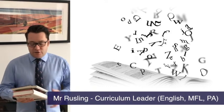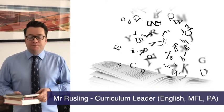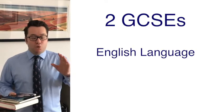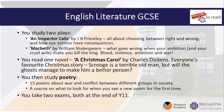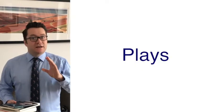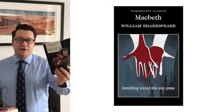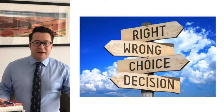Hi Year 9. We're really looking forward to teaching you English over the next two years. You'll do five hours of English each week and at the end you'll get two GCSEs — one in English Language and one in English Literature. In Literature, you'll study four main groups of writing. The first is a couple of plays: An Inspector Calls by J.B. Priestley, and Macbeth by Shakespeare. Both are about the differences between right and wrong and how our decisions impact on others.